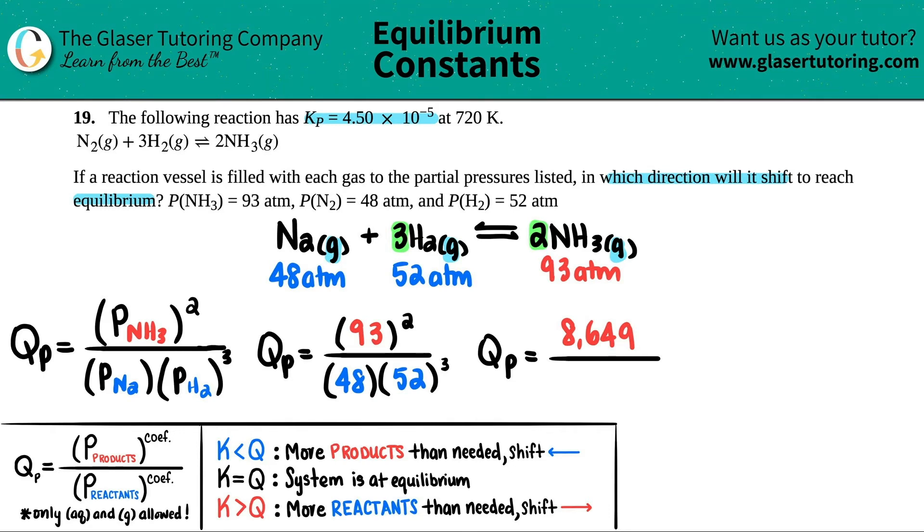And then let's see. We get 52 cubed times 48. Very big number. 129,792. All right, let's do the division. QP equals this number divided by this number. And looks like I have two sig figs. So I'll just say 6.6 times 10 to the negative 2.